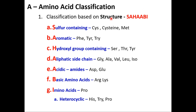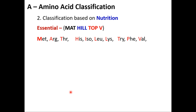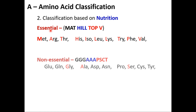The second classification is based on nutrition — essential, semi-essential, and non-essential amino acids. For essential amino acids, use the mnemonic: 'Mat on the hilltop V — that is victory.' MAT = methionine, arginine, threonine; HILL = histidine, isoleucine, leucine, lysine; TOP = tryptophan; V = valine. So these are the ten essential amino acids.